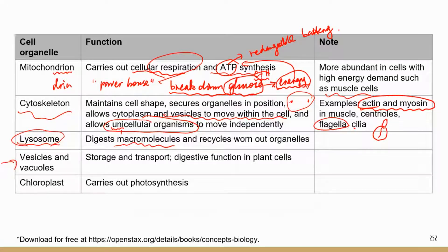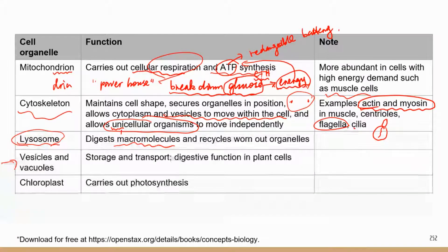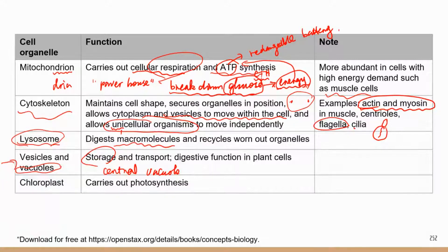The next structures are vesicles and vacuoles. The TEAS study manual only lists vacuoles, but vesicles are very important in transporting things inside the cell. Both perform similar functions — transport and storage. For example, in plant cells there is a big central vacuole that can store a lot of water, sugars, and even toxins.